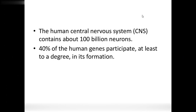The nervous system has two types of cells: neurons and neuroglial cells. Neurons are electrically excitable. Neuroglial cells are non-excitable.